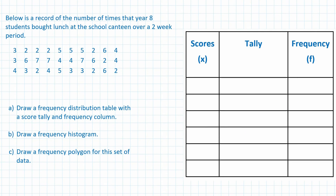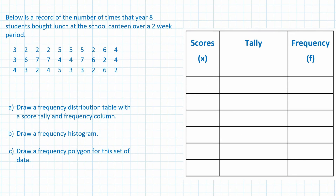Please stop the video and try this one yourself. Part A: construct a frequency distribution table. We know the smallest score is two and the highest score is seven.